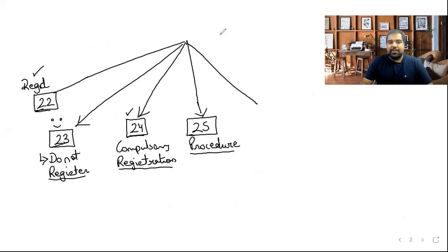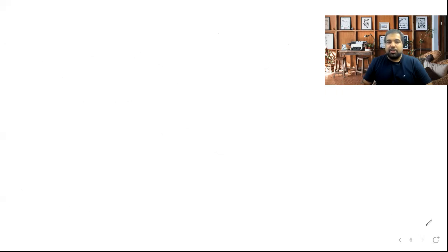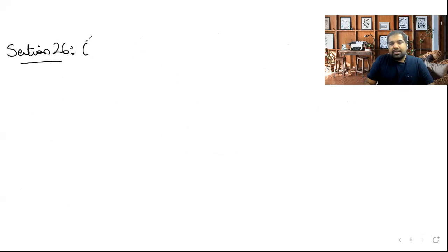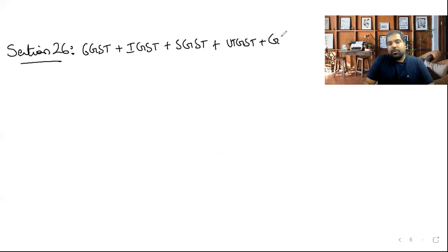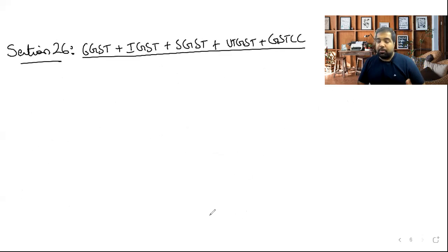Section 26 — I call it the 'Hum Saath Saath' section (we are all in this together). If you register under CGST, you are automatically also registered under IGST, SGST, UTGST, and GST Compensation Cess. No need for separate registrations. Similarly, if registration is denied, it is denied for all of them together.